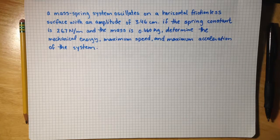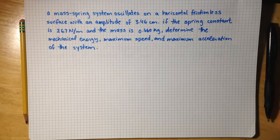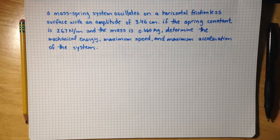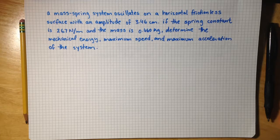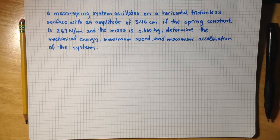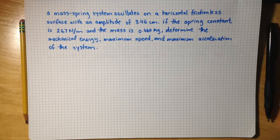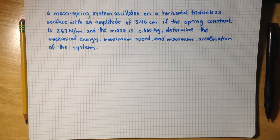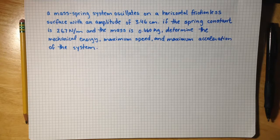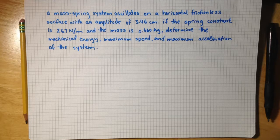A mass spring system oscillates on a horizontal frictionless surface with an amplitude of 3.46 centimeters. If the spring constant is 267 newtons per meter and the mass is 0.46 kilograms, determine the mechanical energy, maximum speed, and maximum acceleration of the system.